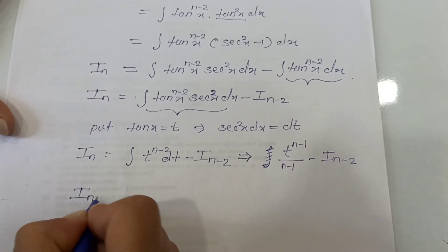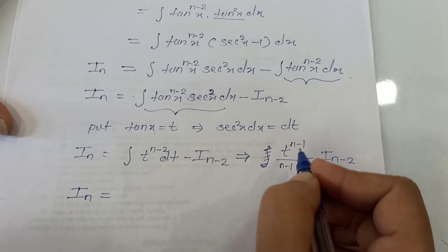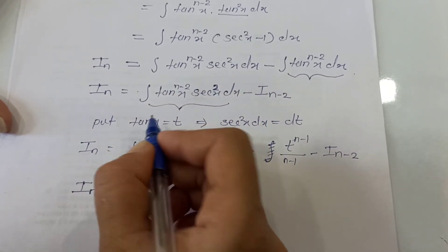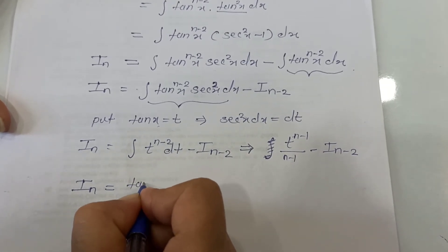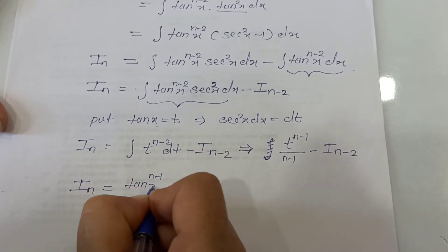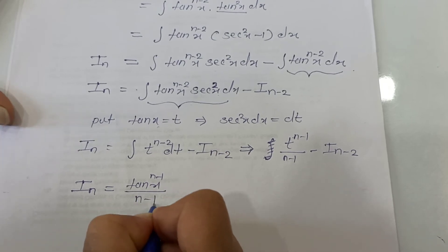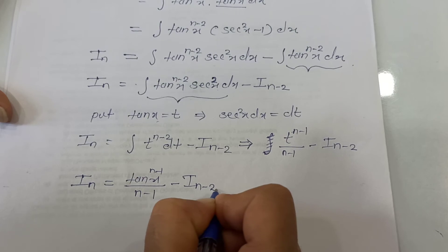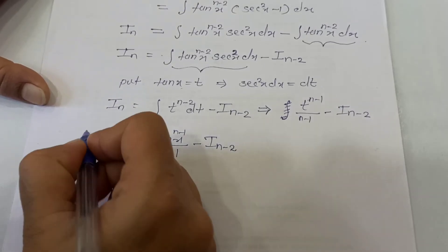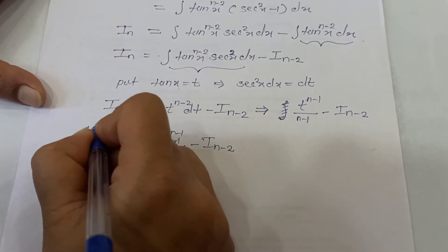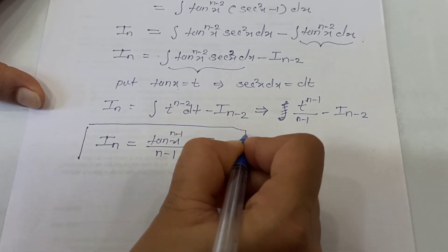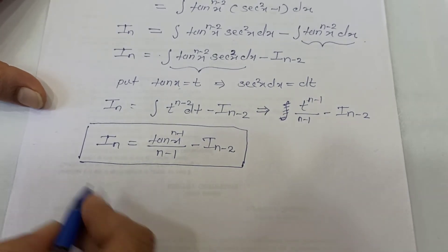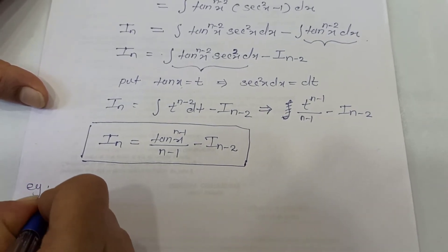Now instead of t we write back the original form: tan. So I_n equals tan raised to n minus 1 times x upon n minus 1, minus I_{n-2}. This is our reduction formula number 3. Now let's take one problem based on this formula.